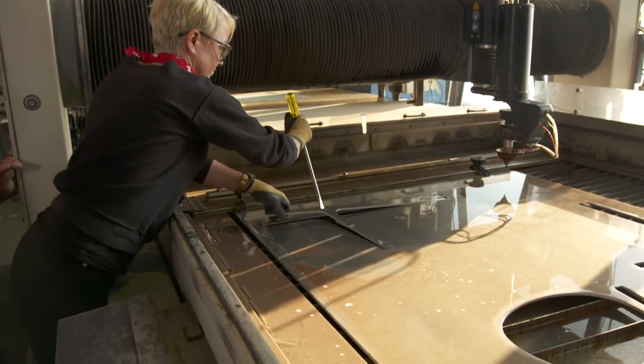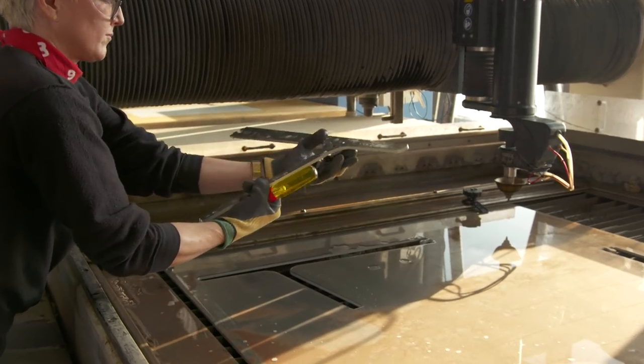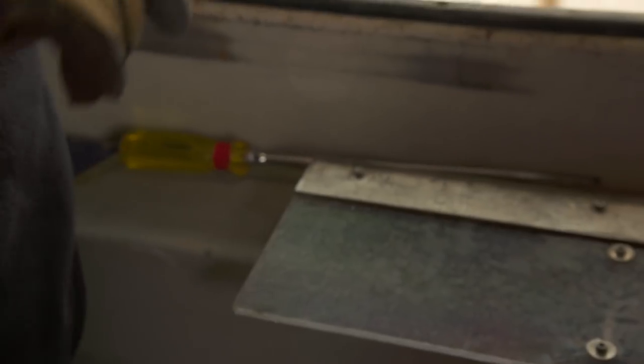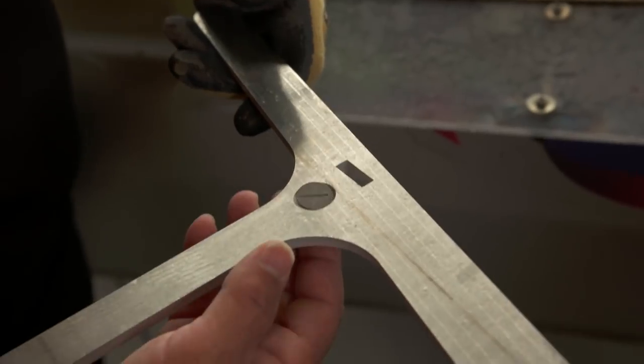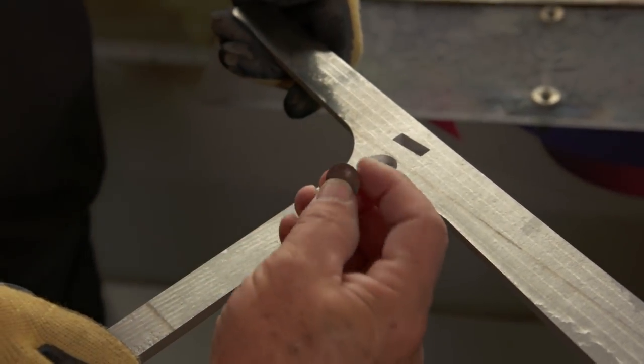So Mary Elizabeth is pulling this off the bed of the water jet. Look at that. And what you'll see is that the profile is cut perfectly. Look at it, here's the piece right here for the countersink. It saved the plug. Wow, I'm impressed.